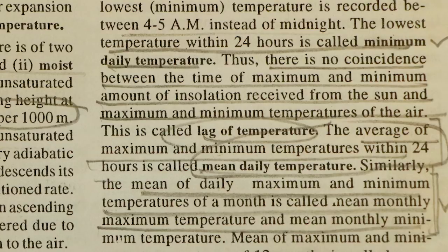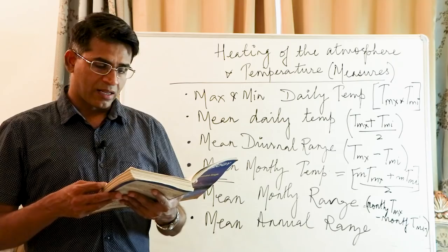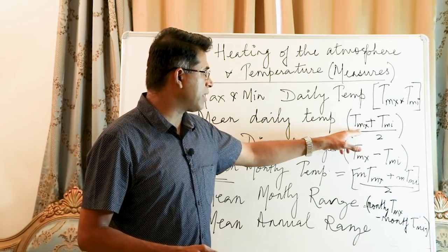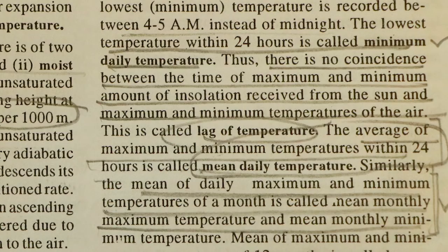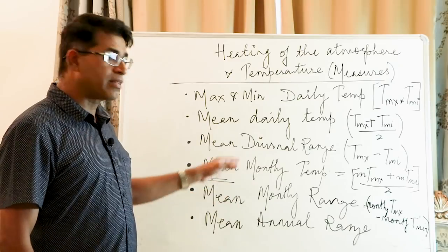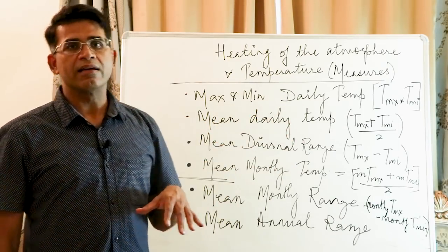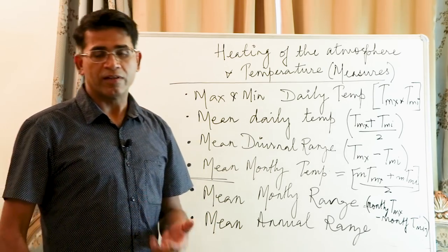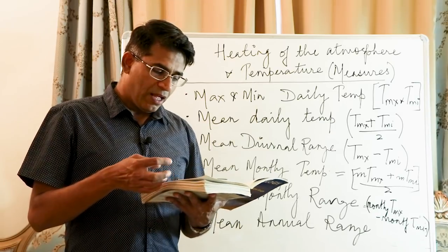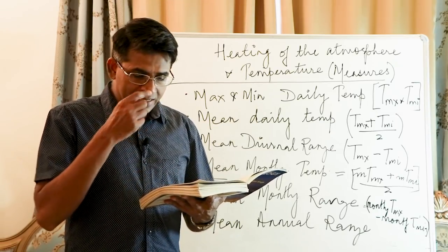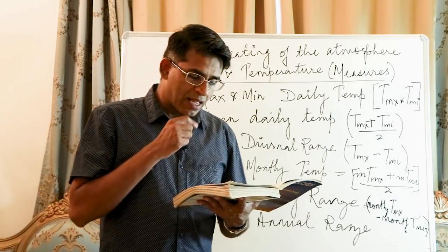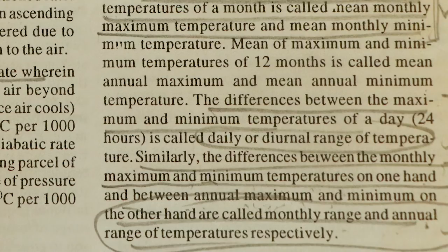The average of maximum and minimum temperatures within 24 hours is called the mean daily temperature. Similarly, the mean daily maximum and minimum temperatures of a month are called the mean monthly maximum and mean monthly minimum. Taking the average of those gives the mean annual temperature of that particular place.